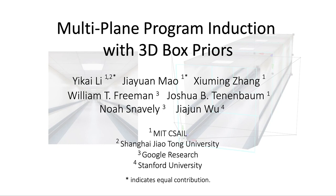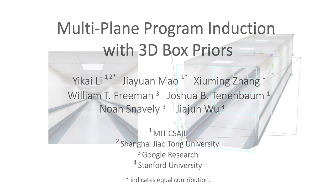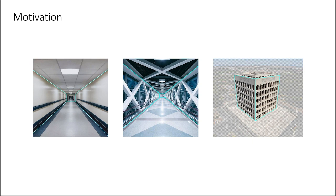We introduce multi-plane program induction with 3D box priors. In this paper, we study two structures in natural images. First, the box architecture of scenes and subjects. And second, the regular program-like texture or patterns in these 2D planes.